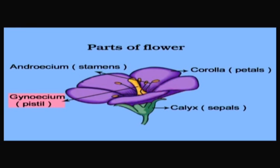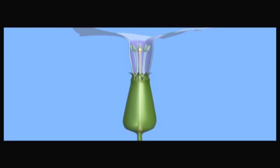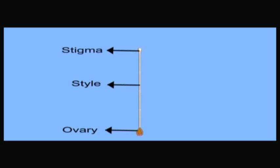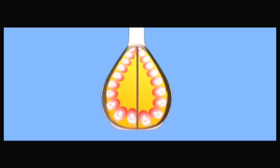Gynoecium — this is the female part and is also known as the pistil. The base is swollen and known as the ovary. A thin long tube-like structure starting from the ovary is called the style. The tip of the style is larger than the rest of the style and is called the stigma. Thus, the pistil has three parts: ovary, style, and stigma.